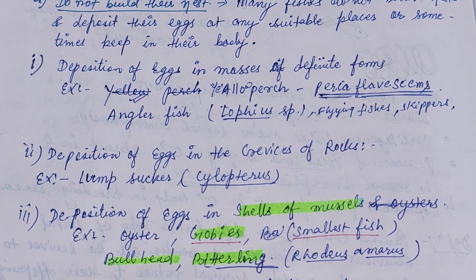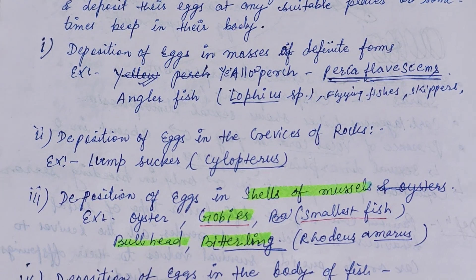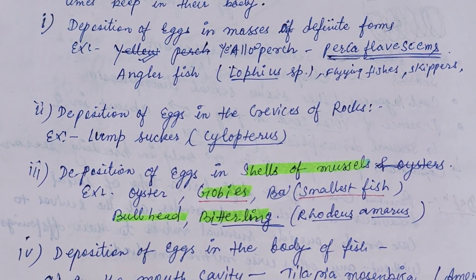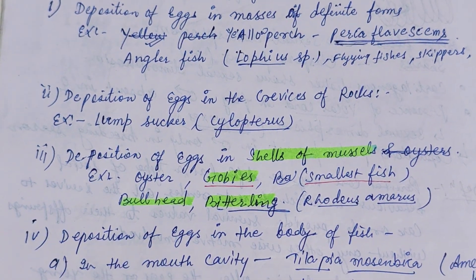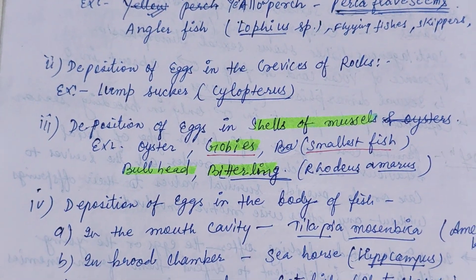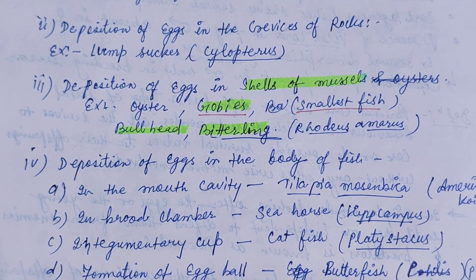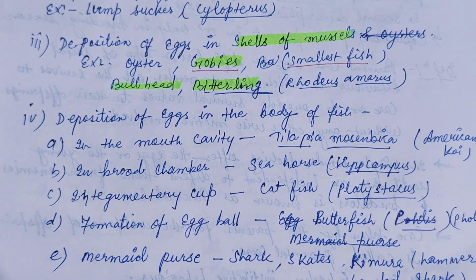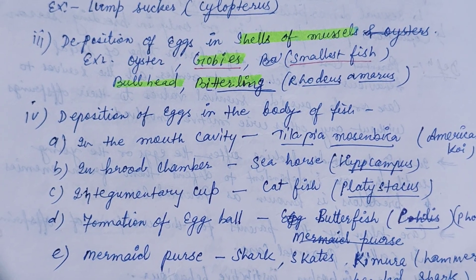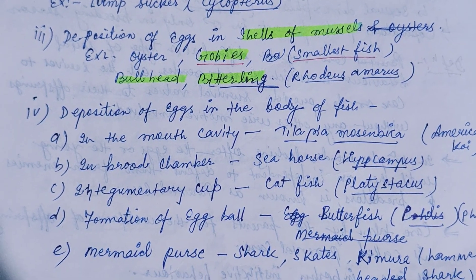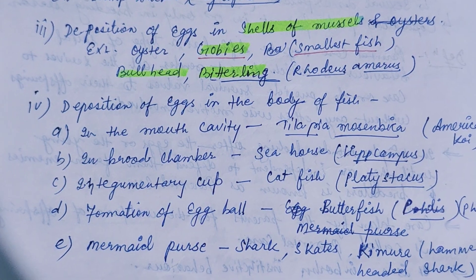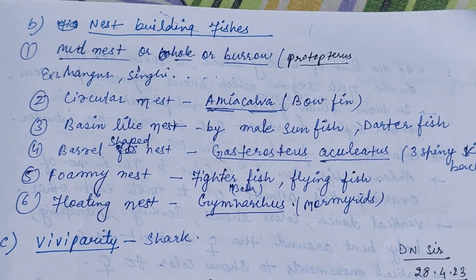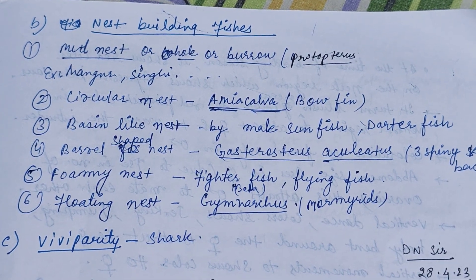The first category is fishes which do not build their nest. Many fishes do not build a nest and instead deposit eggs at any suitable place, or sometimes keep them in their body. This includes deposition of eggs in masses, deposition on surfaces of rocks, deposition in shells of mussels, and deposition within the body of the fish — such as in the mouth cavity, brood chamber, or formation of egg balls or mermaid's purse.